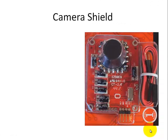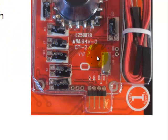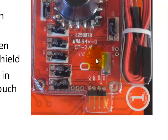Here's an example of shields which can greatly expand the capability of the Arduino board. The first one is the camera shield. It has 640 by 480 resolution, where you can create many do-it-yourself projects, such as building a digital camera when you hook up an SD card shield. When you hook up a wireless Wi-Fi shield, you can make a wireless camera, and in conjunction with a touch shield, you can create a barcode reader.